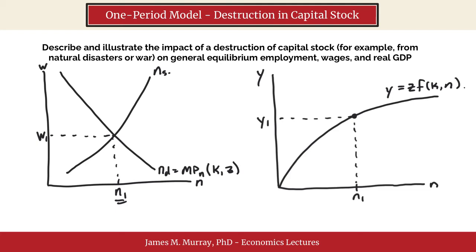If there's a destruction of capital stock, that means we have a decrease in K. With less capital stock to work with, labor is less productive, and therefore the marginal product of labor will be lower. We will illustrate that with a leftward shift in the marginal product curve, i.e. the labor demand curve. Call this ND2. We can label our new equilibrium level of wages W2, N2. We can see there's going to be less employment in equilibrium and lower wages in equilibrium.